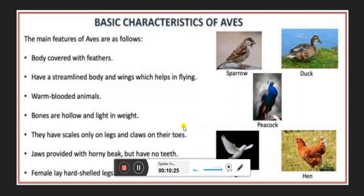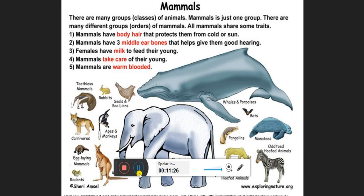Birds have a four-chambered heart. To summarize heart evolution: Pisces have a two-chambered heart; Amphibians and Reptiles have a three-chambered heart; Aves and Mammals have a four-chambered heart as they are more advanced. There are 8,600 species of birds in the world, of which 1,200 types are found in the Indian subcontinent. India's moderate temperature — neither too cold nor too hot — makes it very suitable for birds to survive.